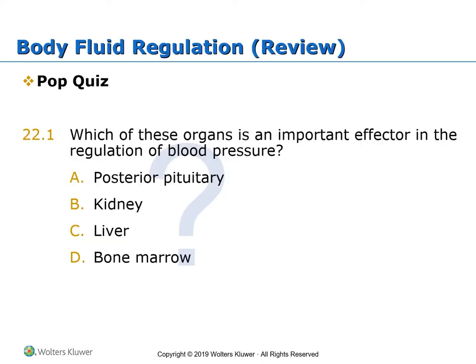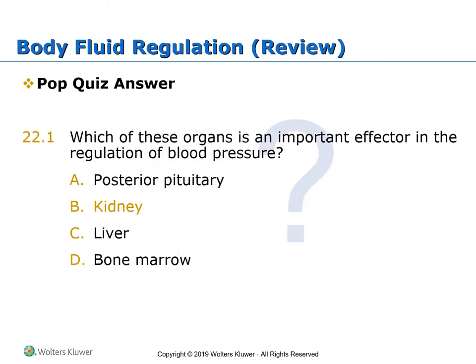Which of these organs is an important effector in the regulation of blood pressure? A. Posterior pituitary. B. Kidney. C. Liver. D. Bone marrow. An important effector in the regulation of blood pressure is the kidney.